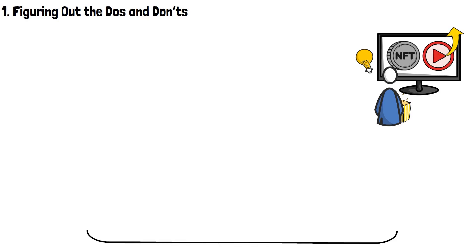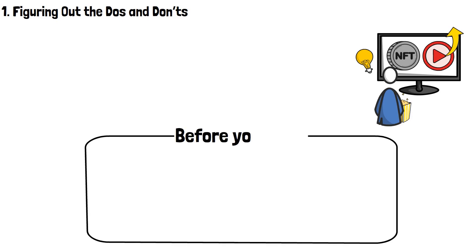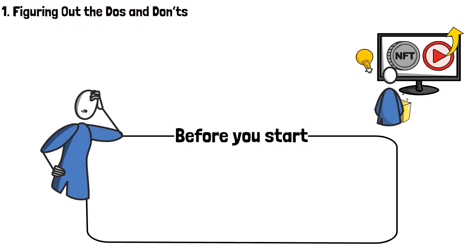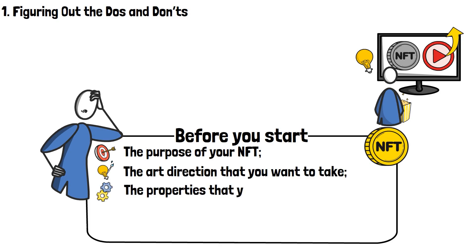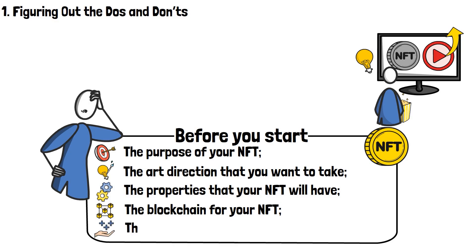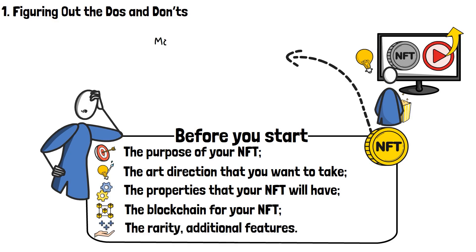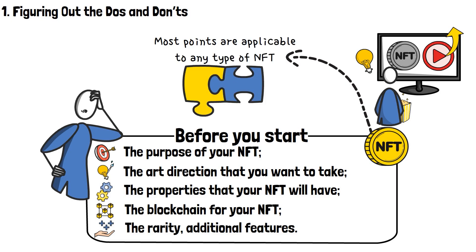Before we get too deep into it, there are a few essential things you need to decide as you start learning how to create an NFT. For a quick reference, these things are: the purpose of your NFT, the art direction you want to take, the properties your NFT will have, the blockchain you'd like to launch on, the rarity, additional features, and so on. Most of these points apply to any type of NFT, but a few are specific to collections instead of single tokens.